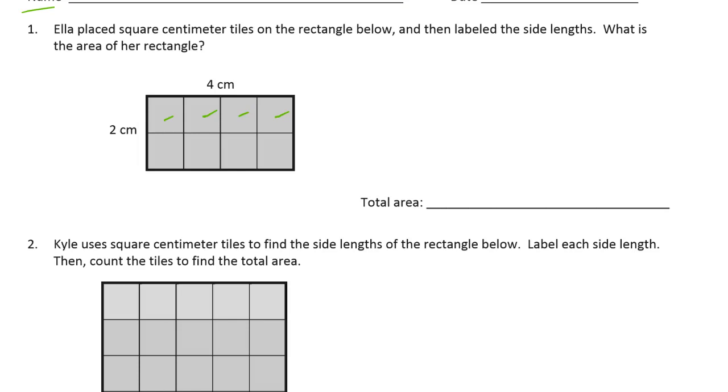You can see it's two rows of four. Five, six, seven, eight. Eight. Now these are square centimeter tiles, so we have to call them square centimeters. Square cm.